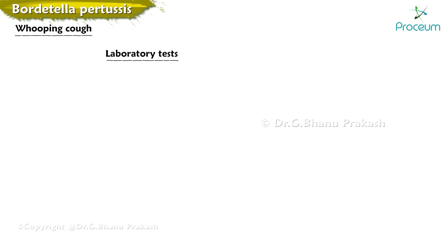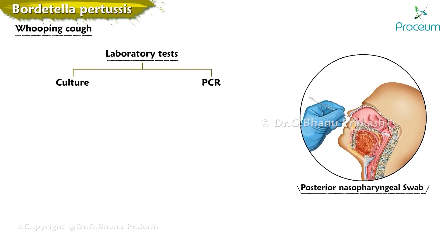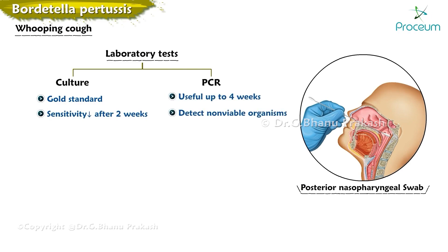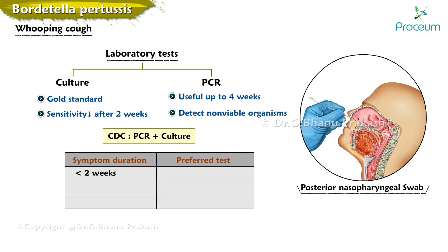For laboratory testing, culture or polymerase chain reaction from deep nasopharyngeal aspiration or posterior nasopharyngeal swabs is used. Culture is the gold standard; however, sensitivity declines after the first two weeks, while PCR remains useful for up to four weeks as it can detect non-viable organisms. The CDC recommends PCR together with culture for diagnosis. For symptoms less than two weeks, preferred tests are PCR and culture; for two to four weeks, PCR is preferred; for greater than four weeks, serology is preferred.